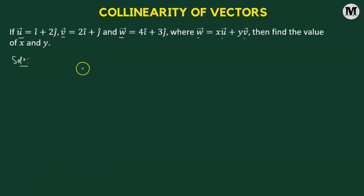We'll start with what we have been provided. Here we are given that w vector is a linear combination of u vector and v vector, where x and y are some scalars.